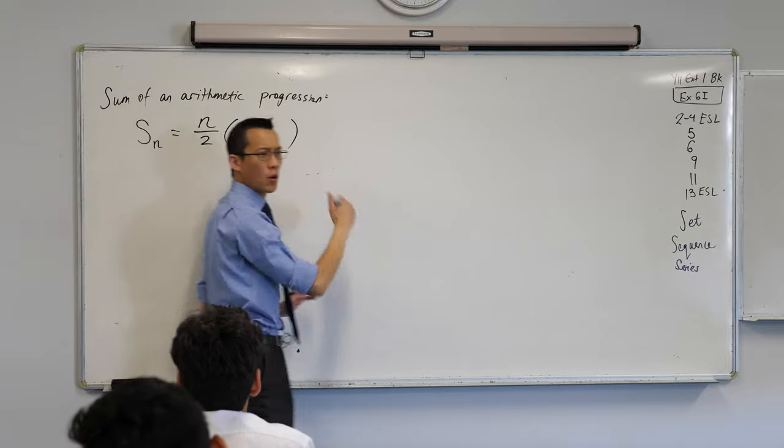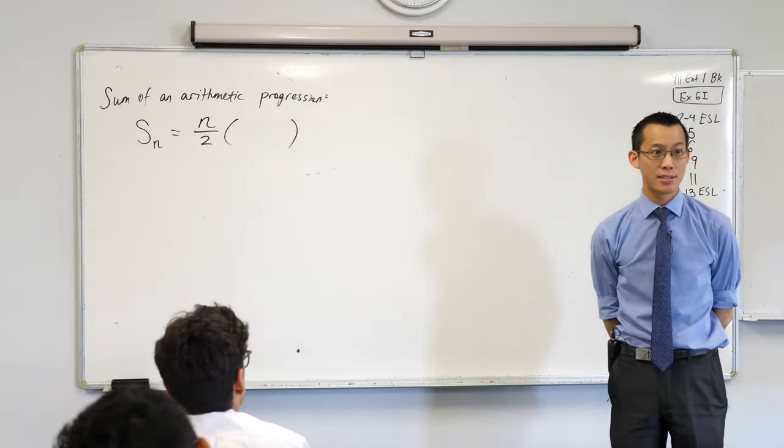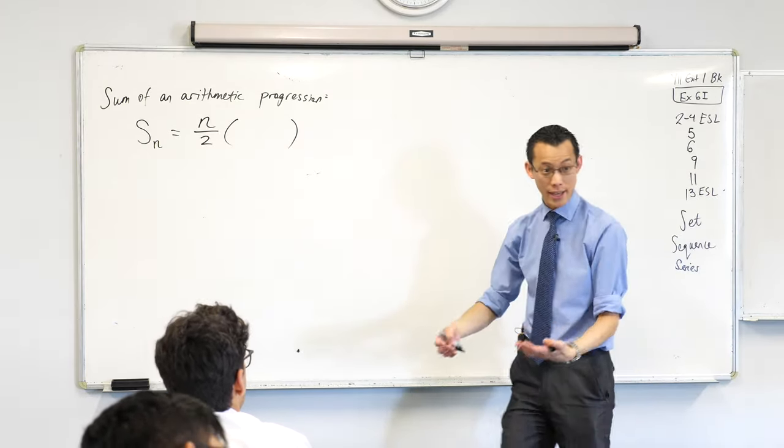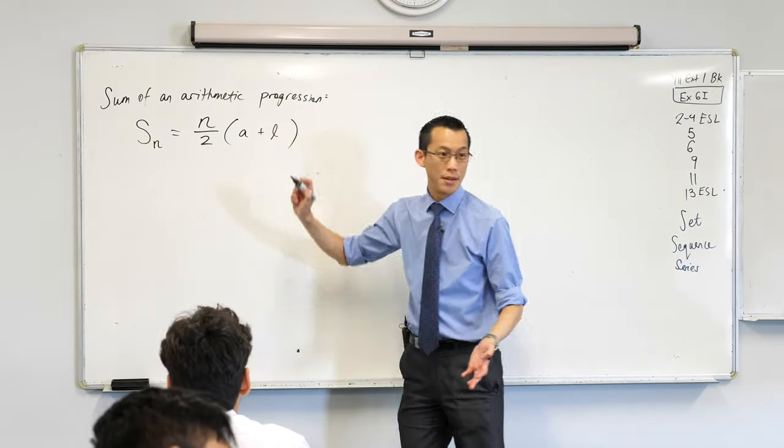And then what do I multiply that by? What is each column, how tall is each column? It was in our examples, one plus eleven, but generally speaking, it's the first term A plus the last term L.